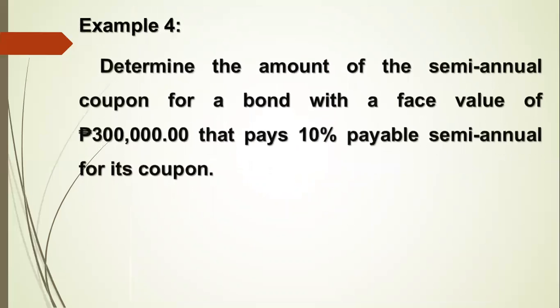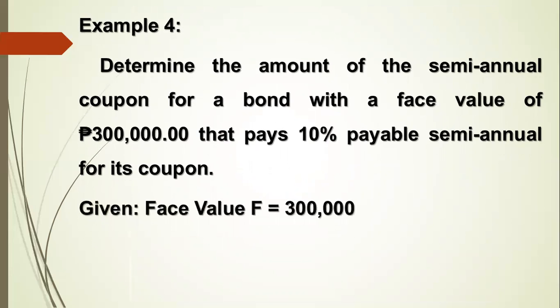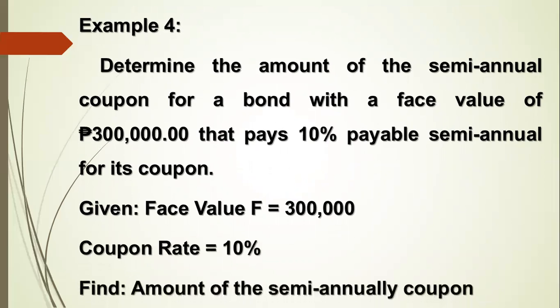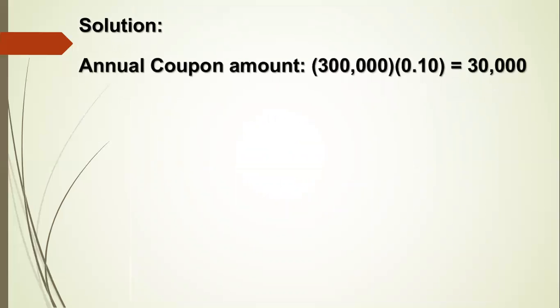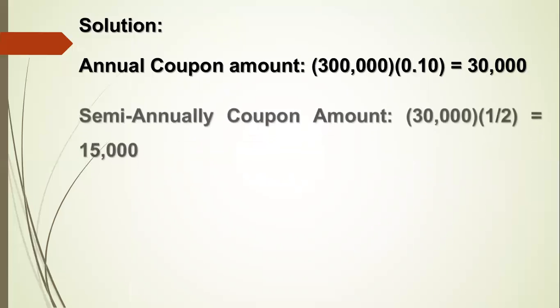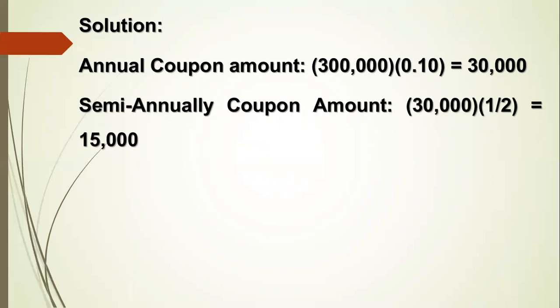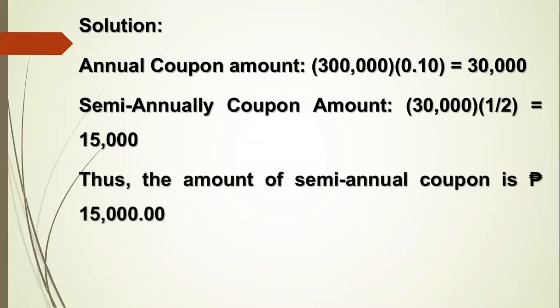Example 4. Determine the amount of the semi-annual coupon for a bond with a face value of P300,000 that pays 10% payable semi-annually for its coupon. Given: face value is P300,000, coupon rate is 10%. Annual coupon amount is P300,000 multiplied by 0.10 equals P30,000. Semi-annual coupon amount is P30,000 divided by 2 equals P15,000. Thus, the amount of the semi-annual coupon is P15,000.